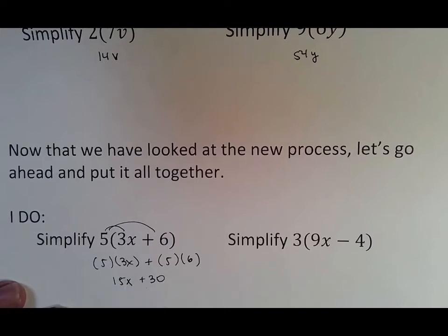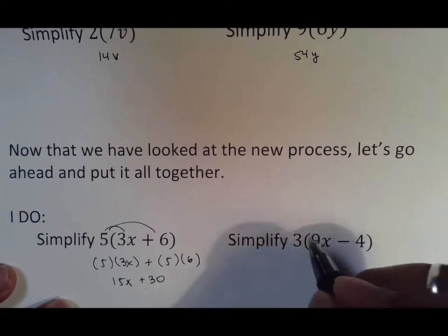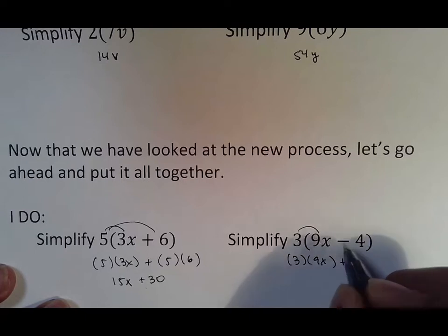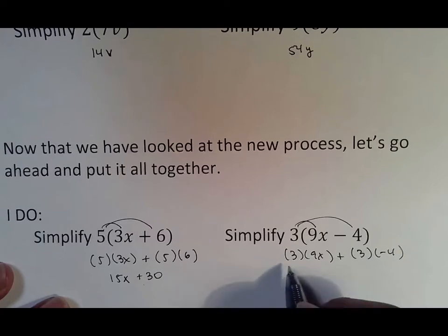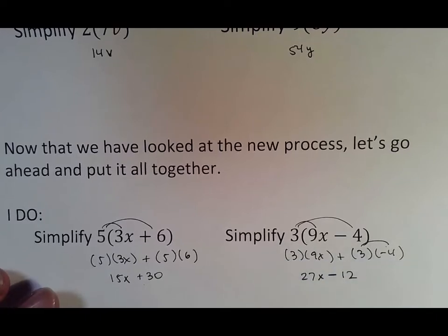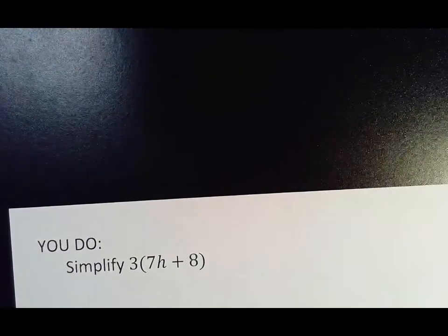Here we have 9x as a term, negative 4 is a term, and 3 is on the outside. Three meets 9x, and three meets negative 4. Work that out: 3 times 9x is 27 with an x attached. Then 3 times negative 4—there's a negative times a positive, which makes negative 12. That's something we've been working on, trying to get used to.